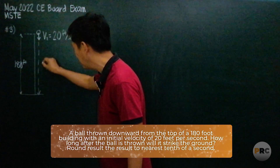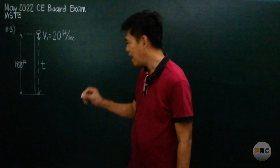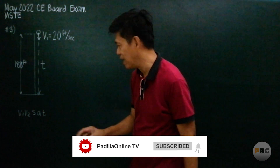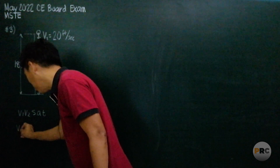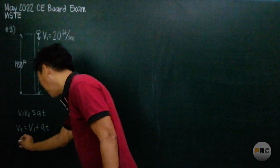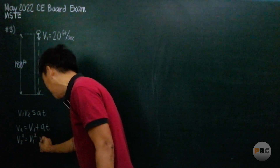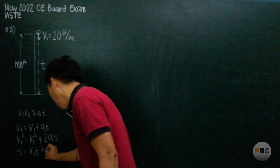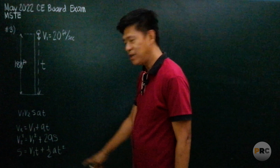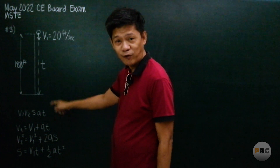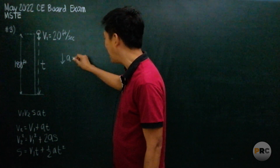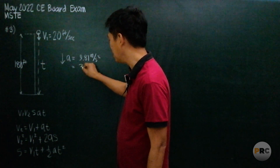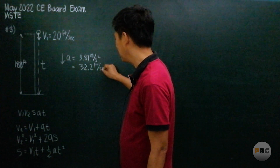We want to find the time from here to here — let us say that this is t. Our formula involves v1, v2, s, a, and t. We have three formulas for freely falling bodies: v2 = v1 + at; v2² = v1² + 2as; and s = v1·t + ½·a·t². In all three formulas, our a is the acceleration due to gravity — 9.81 m/s², or in feet, 32.2 ft/s².